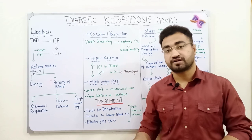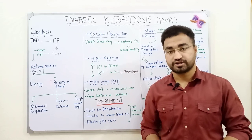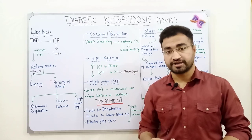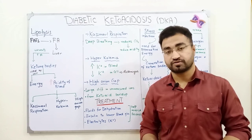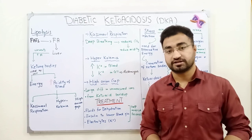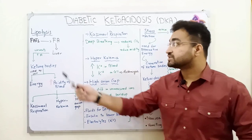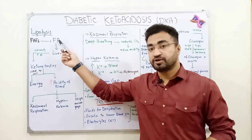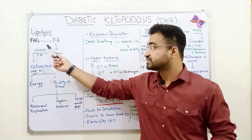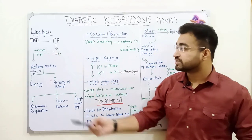Because glucose cannot be used for energy production, the cells will start starving for energy. When the body is not getting energy from glucose, it tries an alternative method — that is lipolysis. Lipolysis is basically the breakdown of fats into fatty acids, and those fatty acids are then converted into ketone bodies inside the liver.